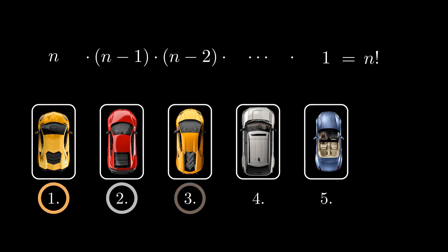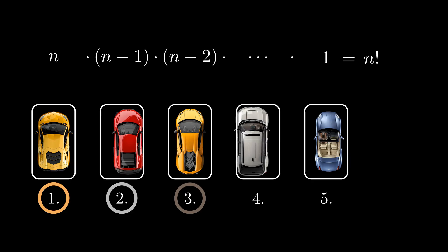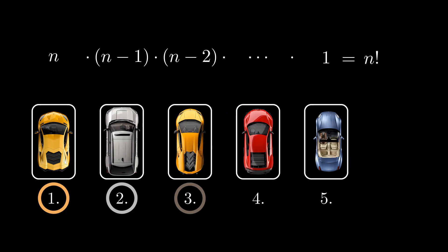This ordering method distinguishes between the elements, so if we swap two cars it counts as a different order. The factorial operation takes all such swaps into account. For the car task, the n was 5. Let's see another example.